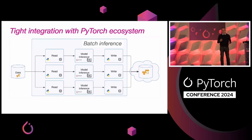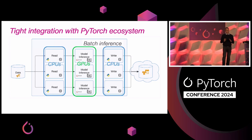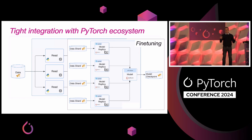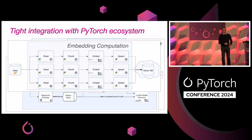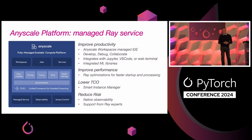Here are some examples of integrations: batch inference — the key point being that pre-processing and post-processing happen on CPUs or less powerful GPUs, while inference happens on powerful GPUs. By leveraging this parallelism, you can reduce cost by 10x compared with running everything on powerful GPUs. Many other workloads are supported like fine-tuning, multimodal search, and embedding computation. For those who prefer a hosted version of Ray, AnyScale — the company behind Ray — provides a managed Ray platform with tools to improve productivity, performance, lower your TCO, and provides native observability and support from Ray experts.